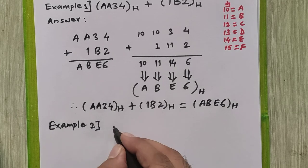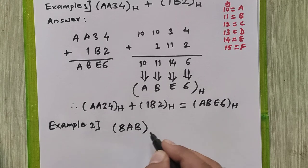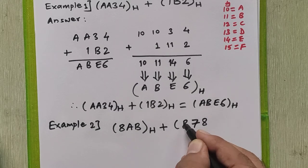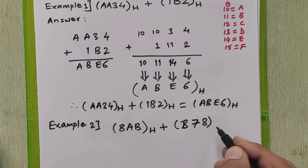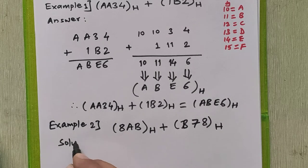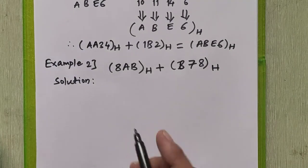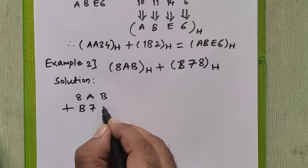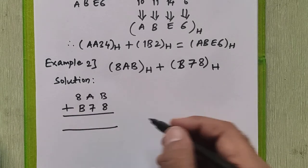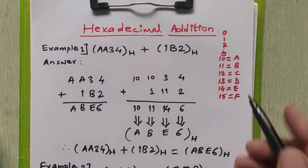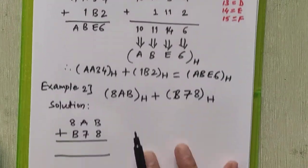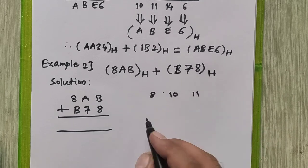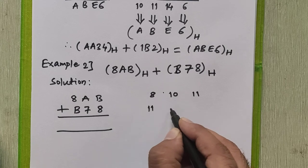In example 2, we are going to add 8AB in hexadecimal plus B78. We will just replace A and B by the actual digits: A is 10, B is 11. So we write 8, 10, 11 for the first number and 11, 7, 8 for the second number.